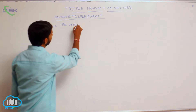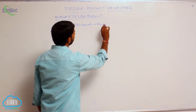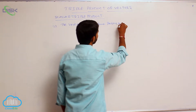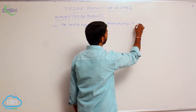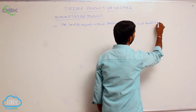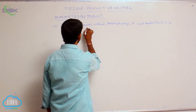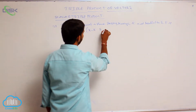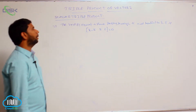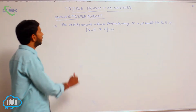The vector equation of a plane passing through the point A̅ and parallel to B̅ and C̅ is: box of (R̅ minus A̅, B̅, C̅) is equal to 0.